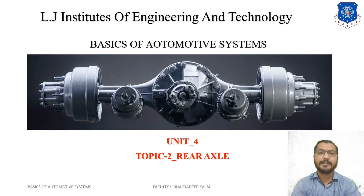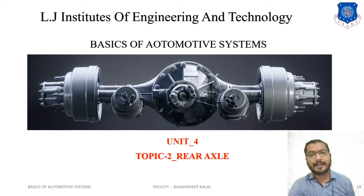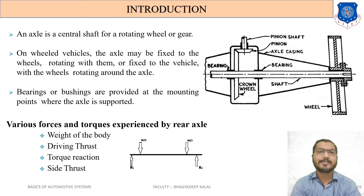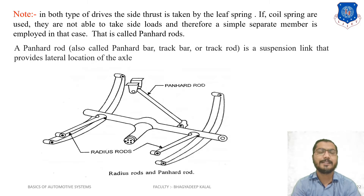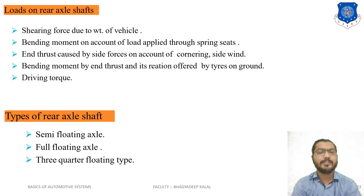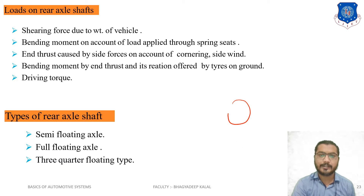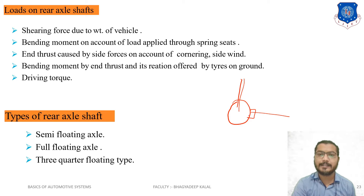In previous video lectures, we covered that there are two types of drive systems or rear axle types. Now let's start the new topic: the three types of rear axles. A rear axle is a connection between the differential and the rear wheel. Power comes from the propeller shaft into the differential, which is connected to the side gears inside the differential mechanism.